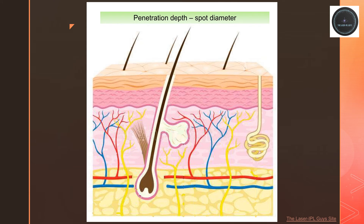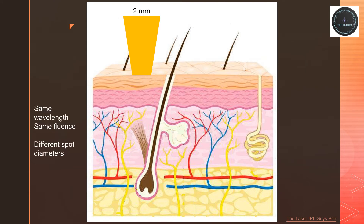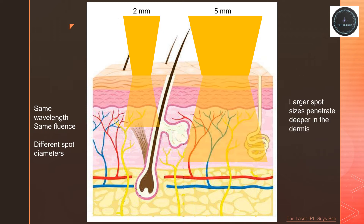So how does spot diameter affect penetration depth? A 2mm spot diameter beam will penetrate a certain distance into the skin, but a 5mm diameter beam with the same wavelength and fluence will penetrate deeper. This is due to scattering effects in the dermis.